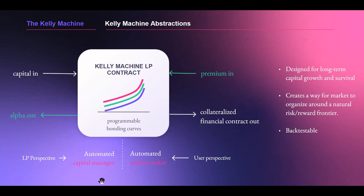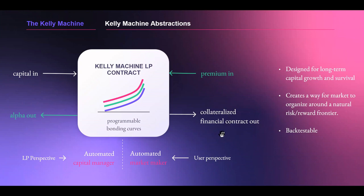From the LP's perspective, the Kelly Machine behaves as an automated capital manager — LPs send capital in and can expect their capital to compound over time. From the user's perspective, it can be seen as an automated market maker, similar to Uniswap or Balancer or Curve, but instead of doing swaps between assets, you send premium in and get collateralized financial contracts out. The system is designed for long-term capital growth and survival, based on the Kelly Criterion framework, creating a natural way for the market to converge around a risk-reward frontier. Crucially, for the first time, this is a paradigm that's fundamentally back-testable.